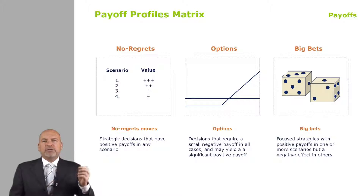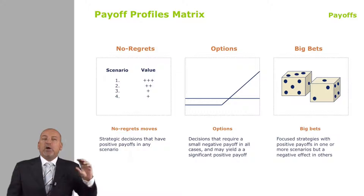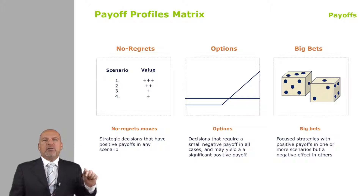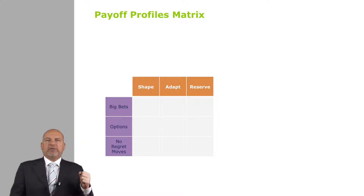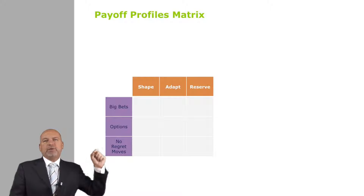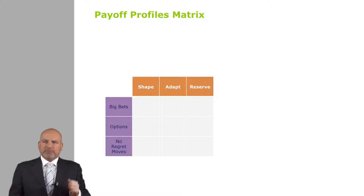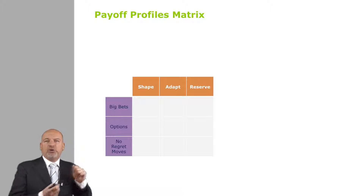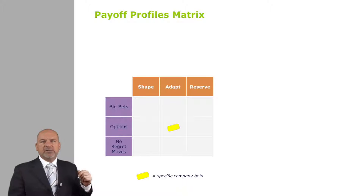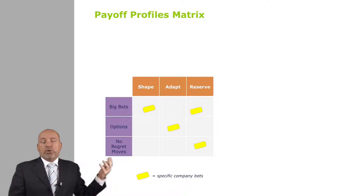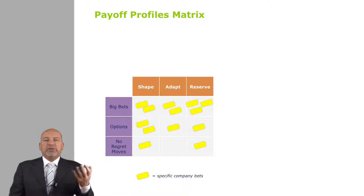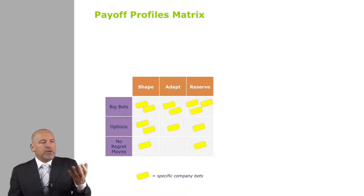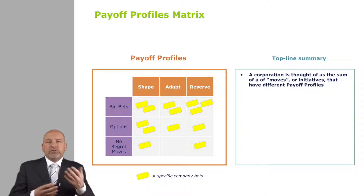When we have these two dimensions — the postures and the bets — we combine them into a three by three matrix, which is the payoff profiles matrix. You put shape, adapt, reserve across the top, and big bets, options, no regret moves vertically. Then you take the initiatives you currently have on the table, think of them as post-its, and plot them. What you find is you have a portfolio of initiatives — it ends up summarizing your company as a portfolio of moves.